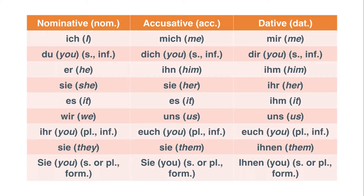Here we have all the pronouns — in the nominative case, the subject case, accusative, and dative, for direct and indirect objects. I'll read them for you so you know how to pronounce them: ich, du, er, sie, es, wir, ihr, sie, and Sie.